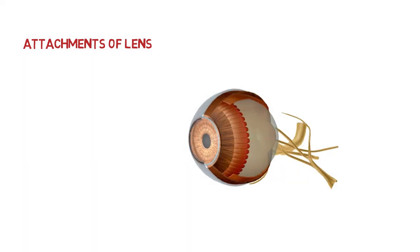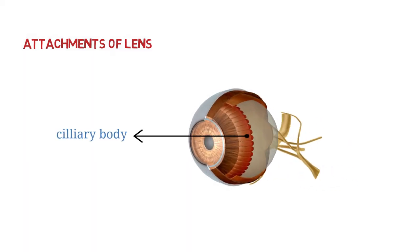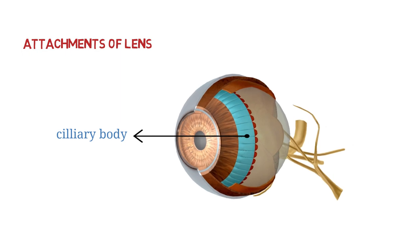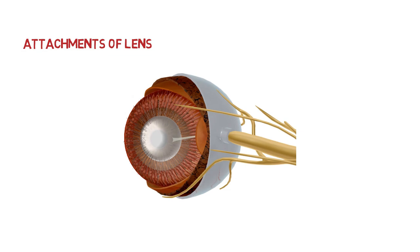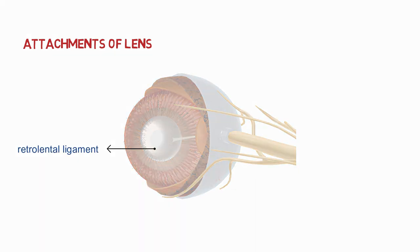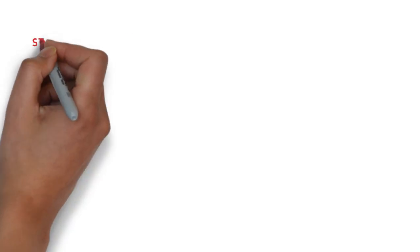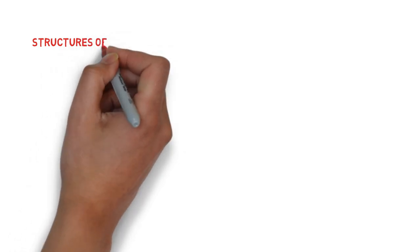What are the attachments of a lens? At the periphery, it is attached to ciliary body by zonules of Zinn, and posteriorly it is attached to retrolental ligament. So what are the structures of a lens?